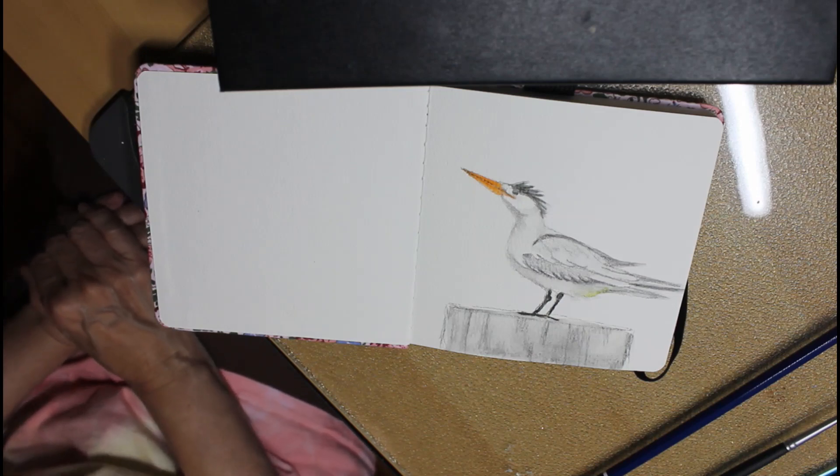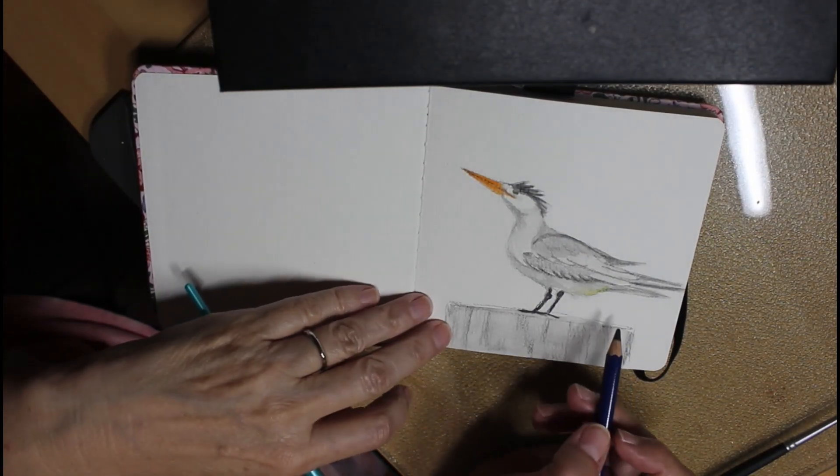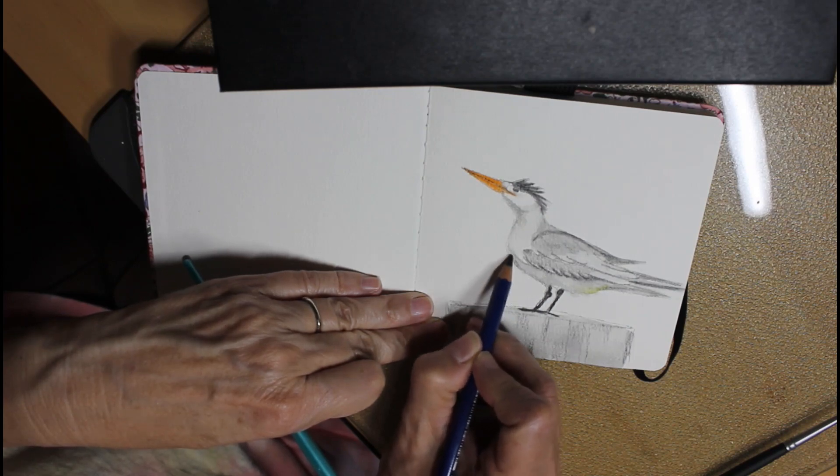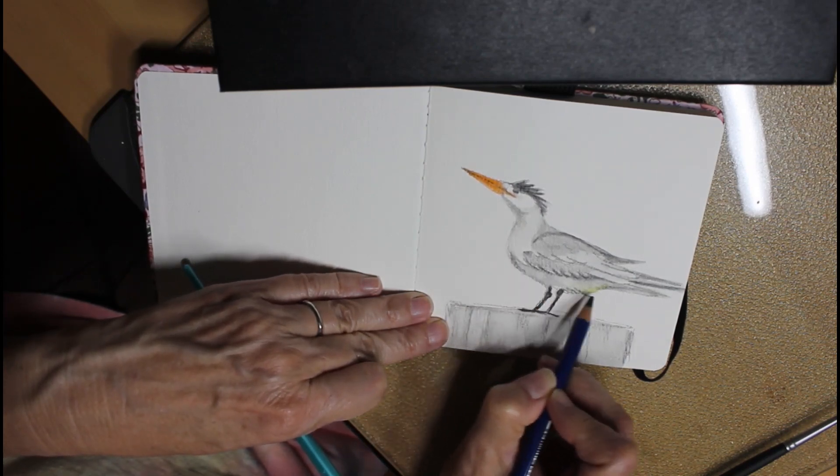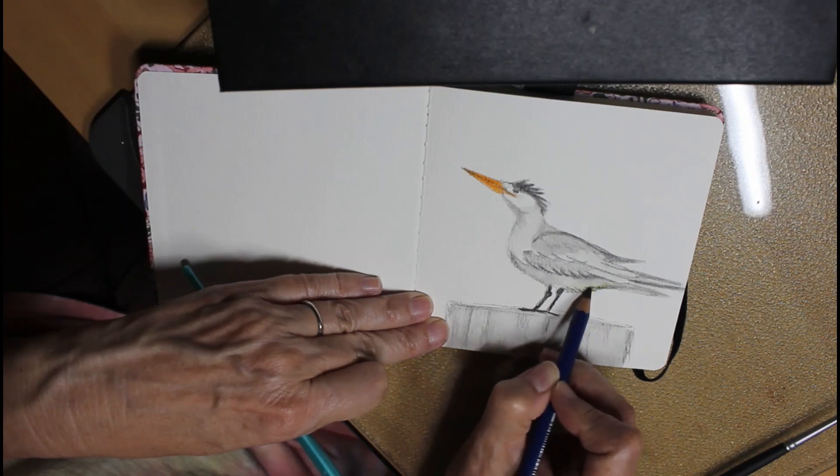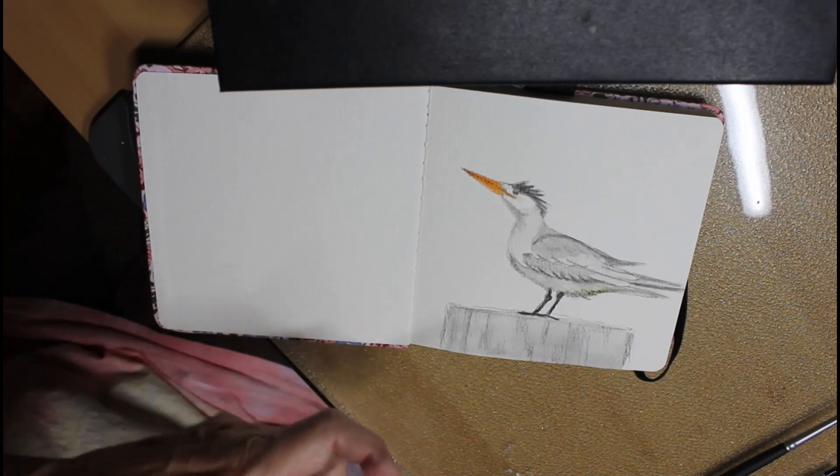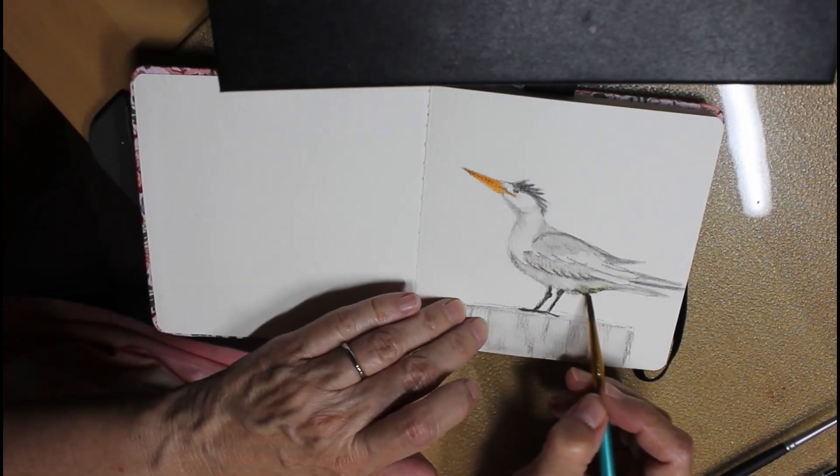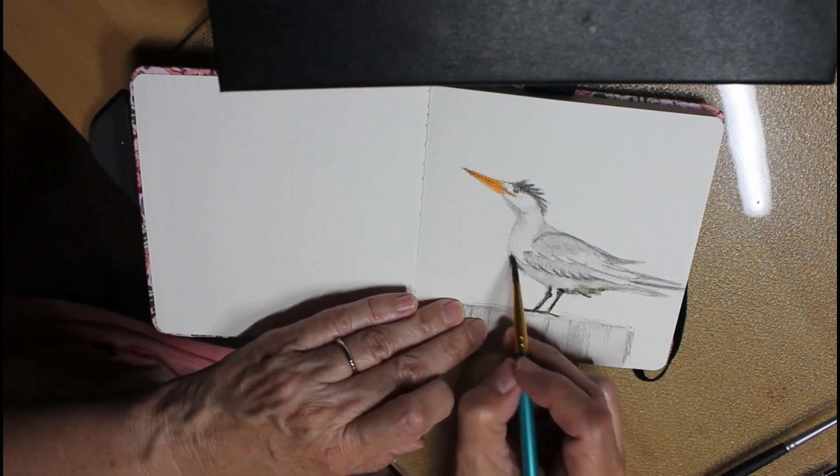All right, and there he is. I'm not sure whether I did anything else to him or not, but yeah, I think I did. Yeah, I wanted to darken a few of the shadows, so I took the 8B pencil and came back underneath the bird and got the shadows a little bit deeper. I wanted those values to look like shadows, so that's what I did there.